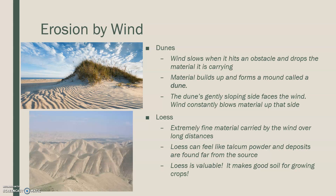The dune's gently sloping side faces the wind. It constantly blows material up that side, but it doesn't always stay on that side — it can move because it's often just based with sand. Loess is extremely fine material carried by wind over long distances. This can often feel like talcum powder, which is a fancy way of saying baby powder, and deposits are found far from the original source. It is very valuable and often makes really good soil for growing crops.